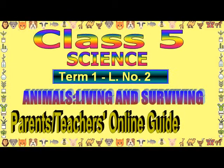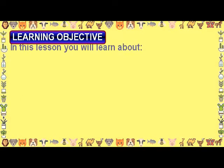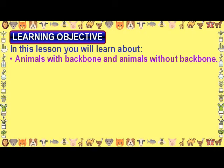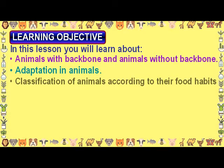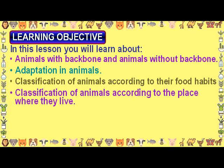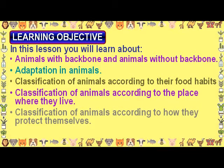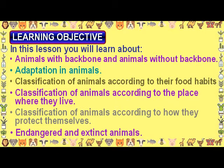Class 5 Science, Term 1, Lesson No. 2: Animals Living and Surviving. In this lesson you will learn about animals with backbone and animals without backbone, adaptation in animals, classification of animals according to their food habits, classification according to the place where they live, classification according to how they protect themselves, and endangered and extinct animals.